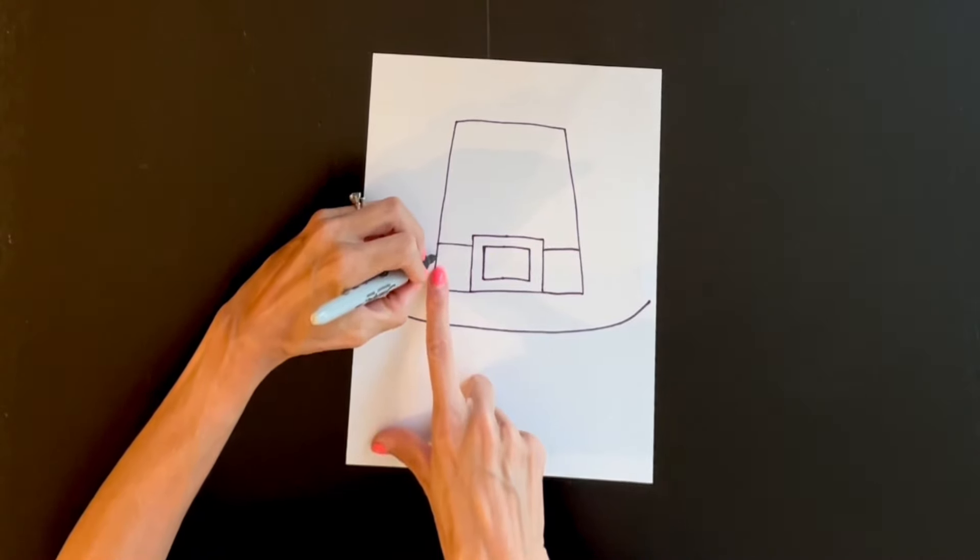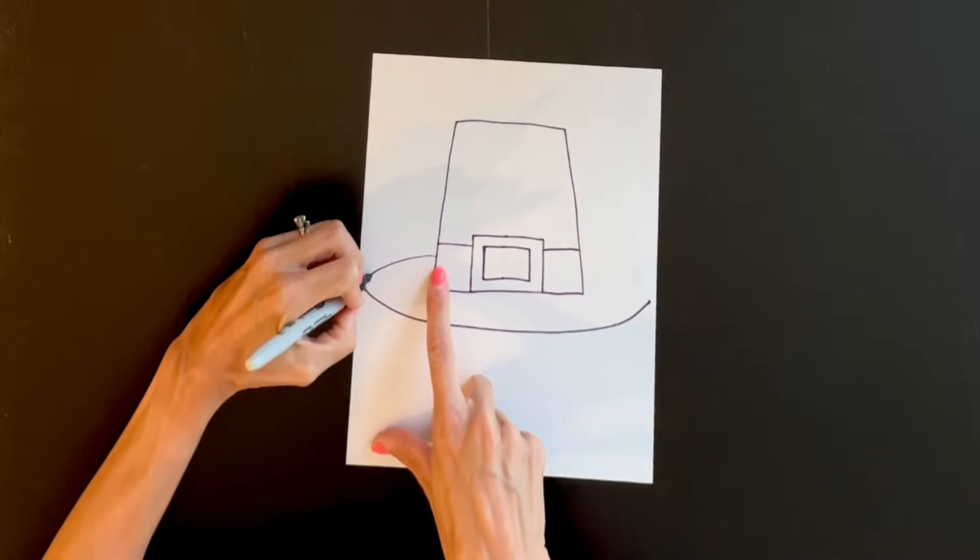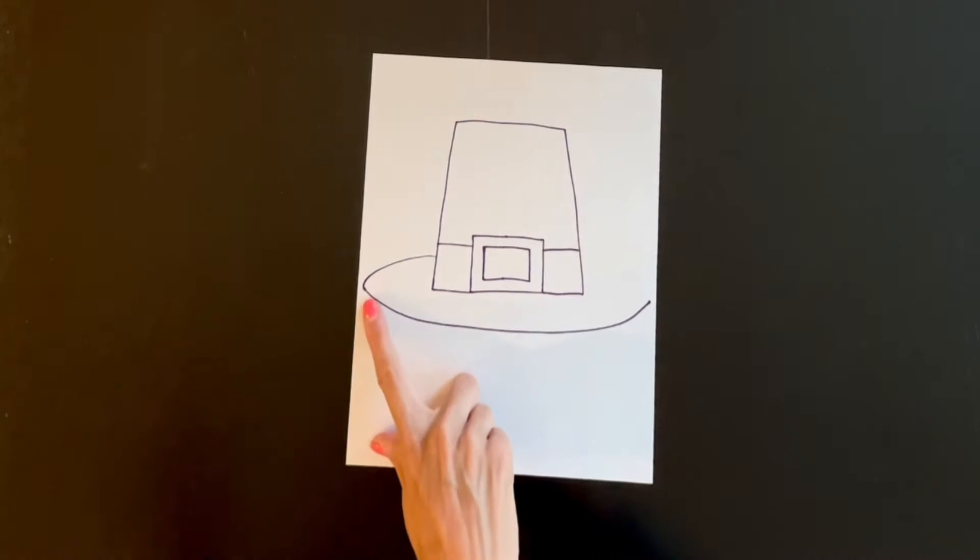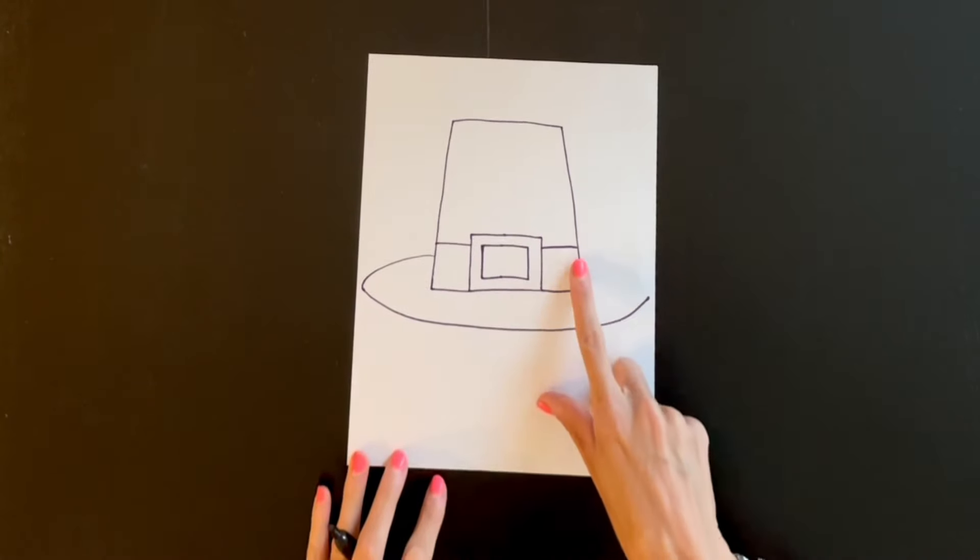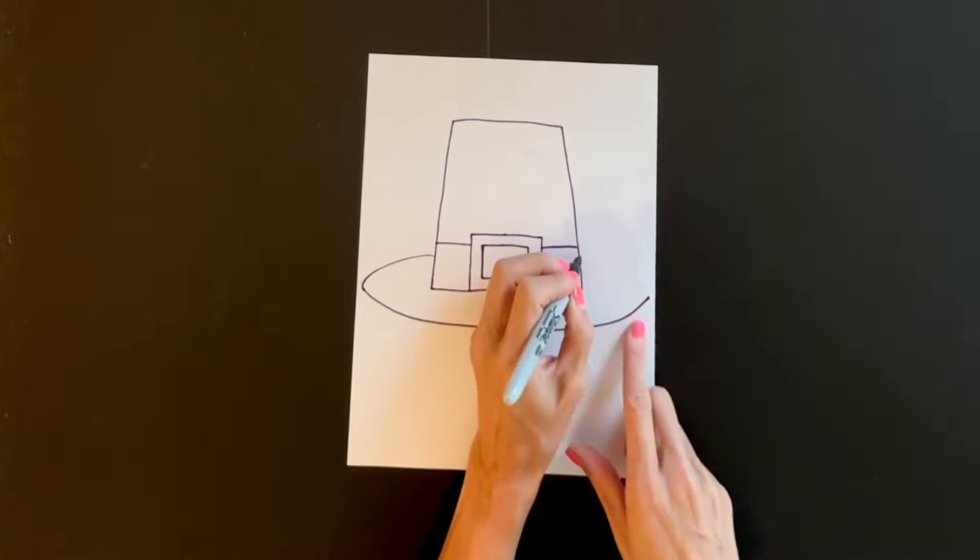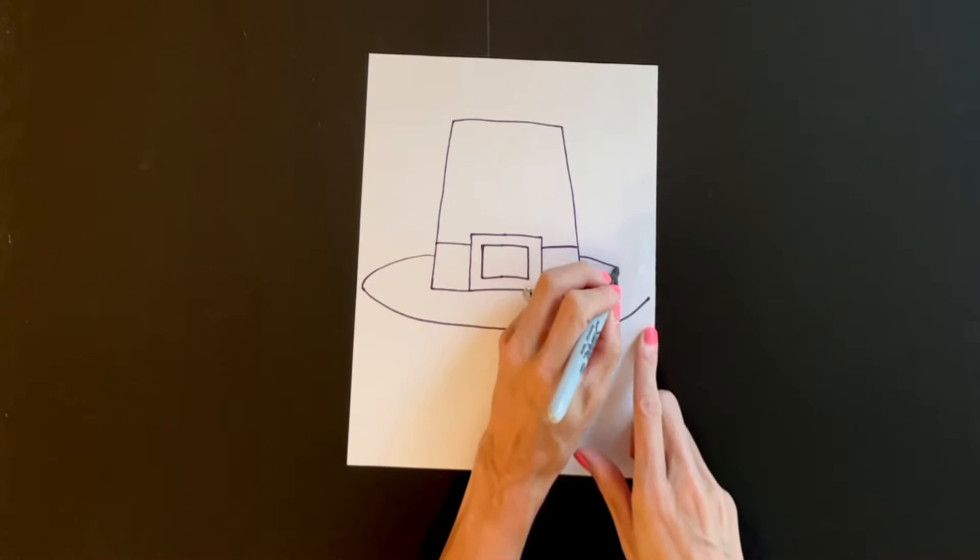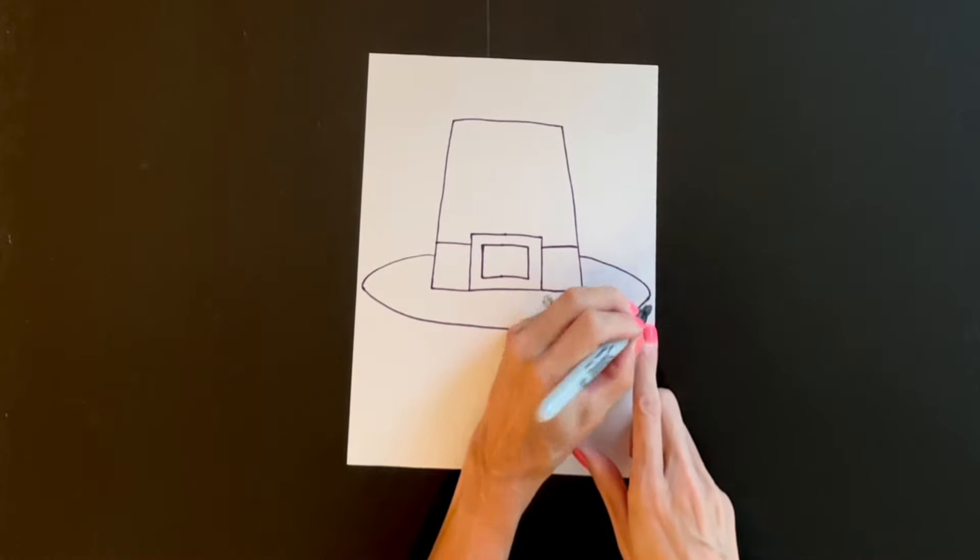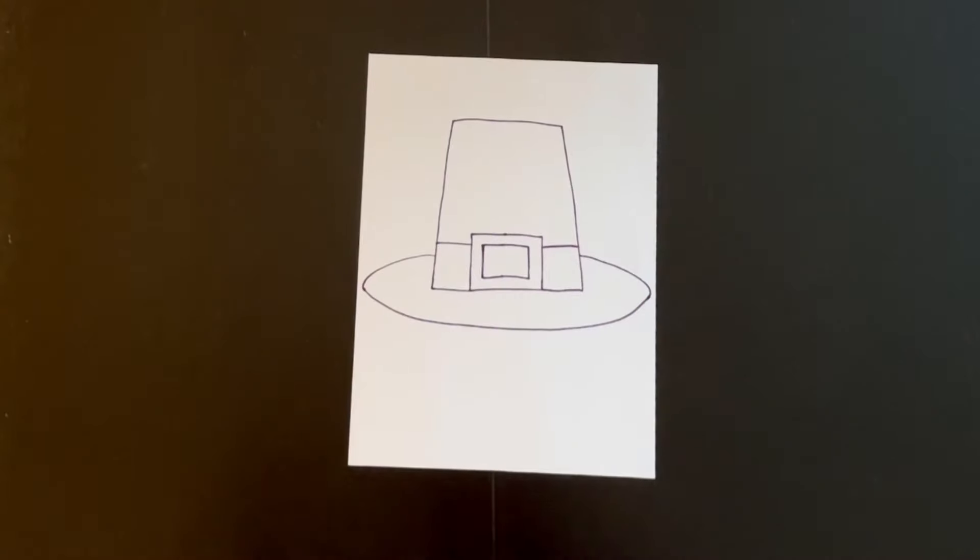Starting on this line I'm going to draw a curved line coming out and around connecting right over there with that line. Same thing right here, bring it down just a little bit and I'm going to curve it out and around connecting it.